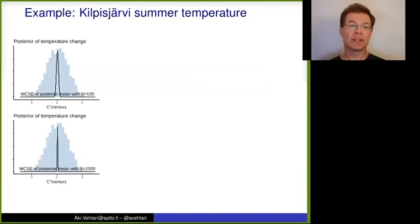Now these 100 and 2,000 I mentioned, they were for posterior mean, and here they are also illustrated now that we have the histogram with the blue, and then the black line is showing the accuracy with 100 or 1,000 draws for posterior mean.